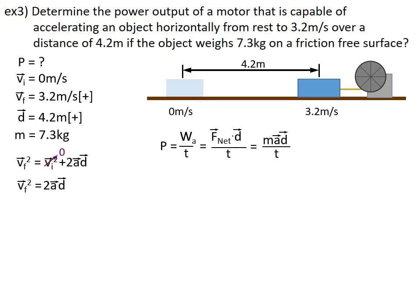To get acceleration by itself, I will divide both sides by 2D. Then the 2's on the right hand side and the D's on the right hand side will factor out.